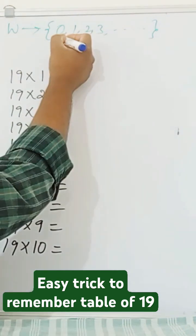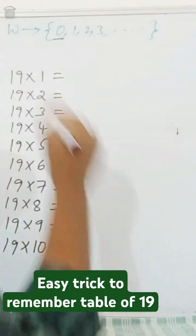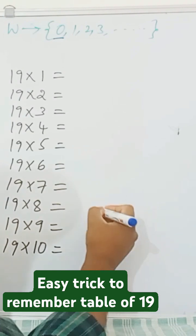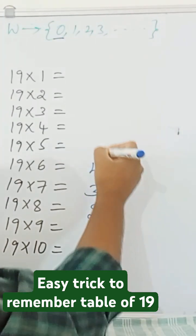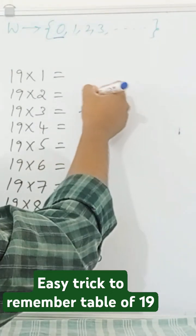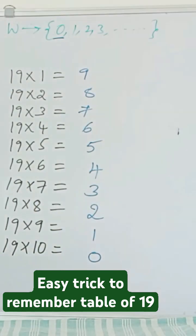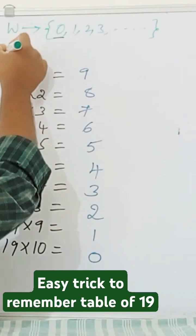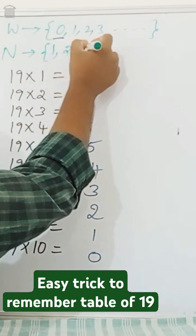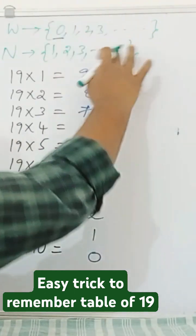So first number is 0. Write whole numbers like this: 0, 1, 2, 3, 4, 5, 6, 7, 8, 9. Next set up natural numbers starts from 1, 1, 2, 3, etc. till infinity.